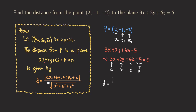We have the absolute value, then A times X-zero. A is three and X-zero is two, so we get three times two. Then plus B times Y-zero — B is two and Y-zero is negative one, so times negative one. Then plus C times Z-zero — C is six and Z-zero is negative two, so times negative two. Then plus K, and remember to include the sign — K is negative five, so plus negative five. That ends the absolute value in the numerator.